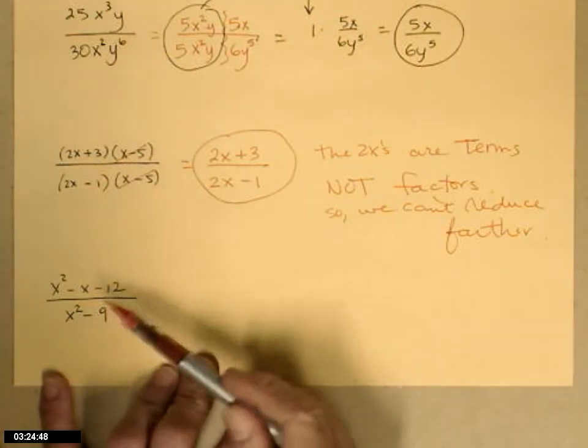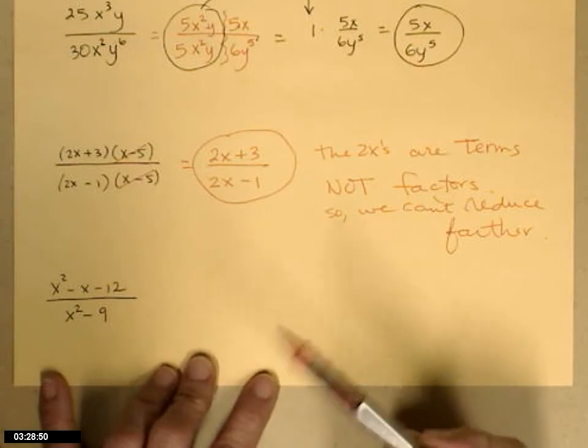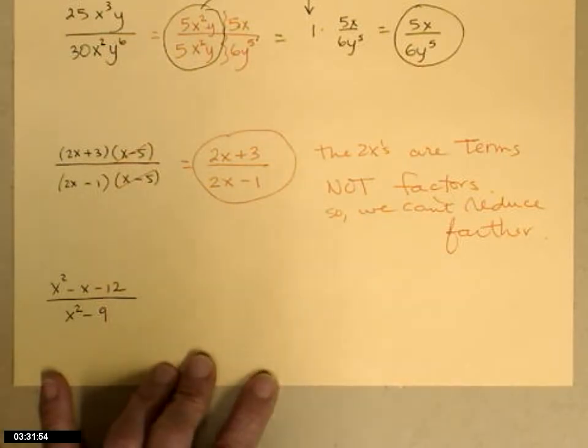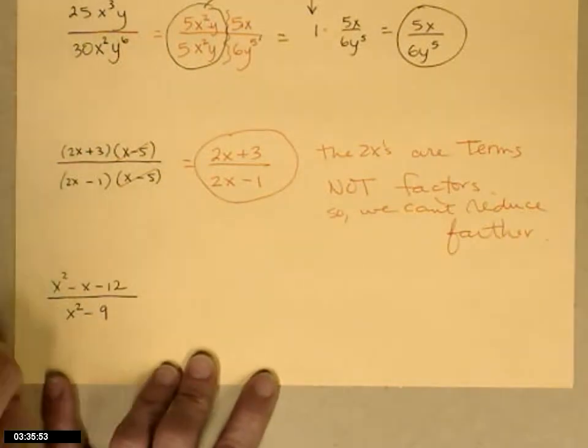And then on the last one, I have x squared minus x minus 12 on the top and x squared minus 9 on the bottom. I don't have any factors to cancel, so that means that's my job, is to do the factoring first.